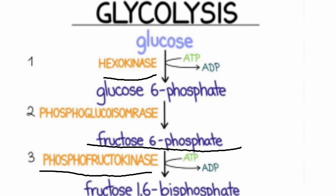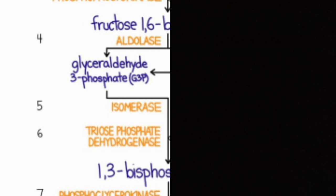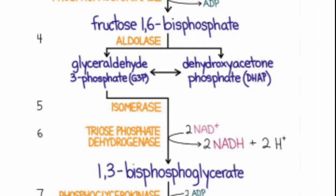Step 4: fructose-1,6-bisphosphate is cleaved to yield two different triose phosphates — glyceraldehyde-3-phosphate, which is an aldose, and dihydroxyacetone phosphate, which is a ketose. The enzyme that catalyzes this reaction is aldolase. Step 5: dihydroxyacetone phosphate is rapidly and reversibly isomerized to glyceraldehyde-3-phosphate by the enzyme triose phosphate isomerase. This reaction completes the preparatory phase of glycolysis, in which the hexose molecule has been phosphorylated at C1 and C6 and then cleaved to form two molecules of glyceraldehyde-3-phosphate. Energy is utilized in the form of ATP.